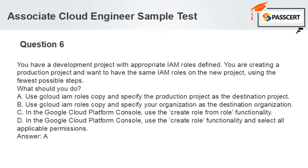A. Use GCloud IAM roles copy and specify the production project as the destination project. B. Use GCloud IAM roles copy and specify your organization as the destination organization. C. In the Google Cloud Platform Console, use the Create Role from Role functionality. D. In the Google Cloud Platform Console, use the Create Role functionality and select all applicable permissions. Answer: A.